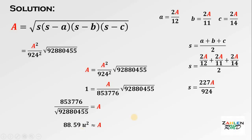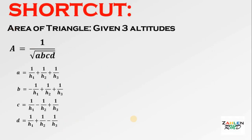And that's our answer for Method 1 — we're done with the first solution. Now let's have the second method, where we use a formula to find the area of a triangle given its three altitudes.